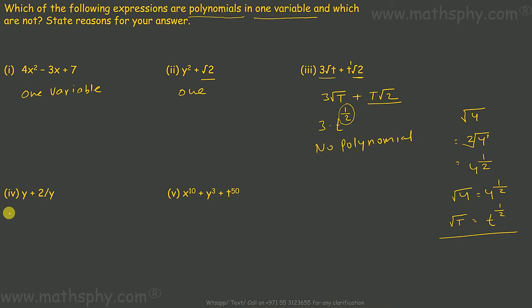Fourth one: y has a power of 1, alright. This is 2/y. This 2/y I can write as 2 into 1/y. Now 1/y can be written as y raised to power negative 1.